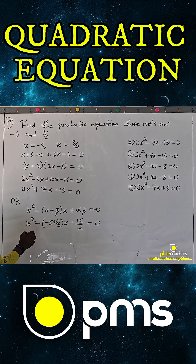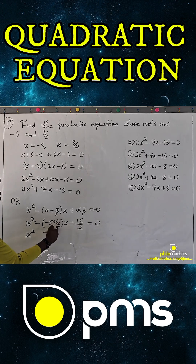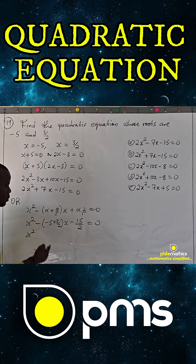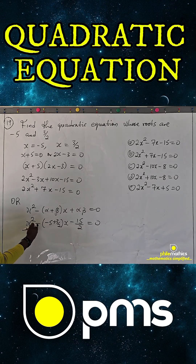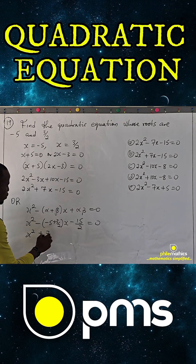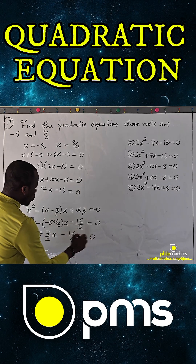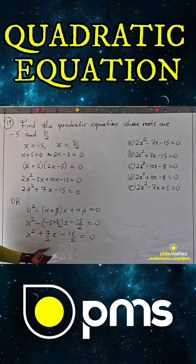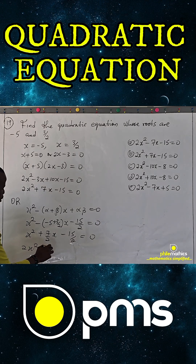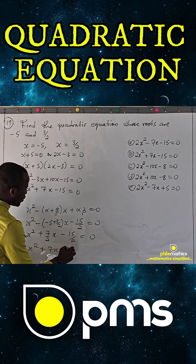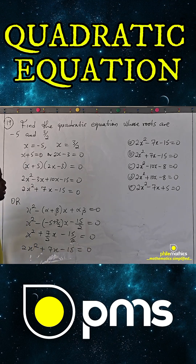Adding the sum of the roots: minus five plus three over two gives minus seven over two, so negating it gives plus seven over two. We now have x squared plus seven over two x minus fifteen over two equals zero. Multiplying through by the LCM which is two, we get two x squared plus seven x minus fifteen equals zero.